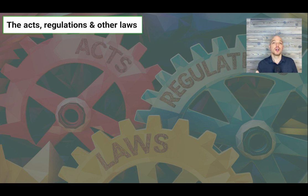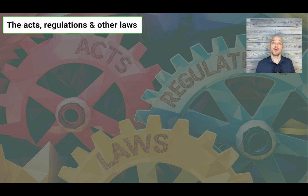Regulations provide more detailed rules under the Act's authority, covering areas like academic requirements for licensure and performance standards for professional engineers. They allow for specific requirements to be adapted as needed. Complementing the Professional Engineers or Geoscience Act and regulations, associations operate under their own set of bylaws that provide more granular rules and procedures for governing the organization's regulatory activities.